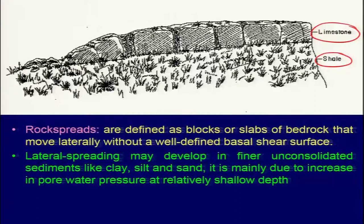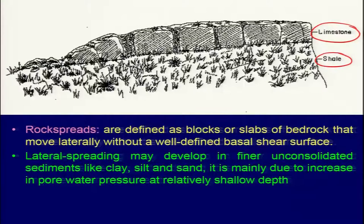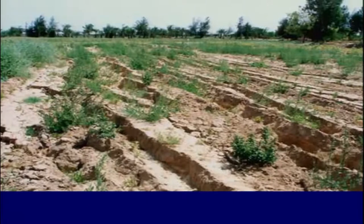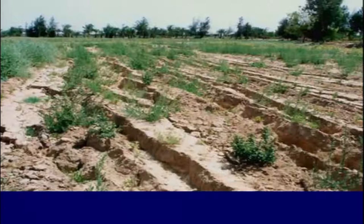Lateral spreading is mainly due to the increase in pore water pressure at relatively shallow depth. So even if you have near-surface material and a very gentle slope, you can experience lateral spreading. Rock spread and lateral spread — this is a typical example encountered during the 2001 Bhuj earthquake, basically because of lateral spreading along a very gentle slope.